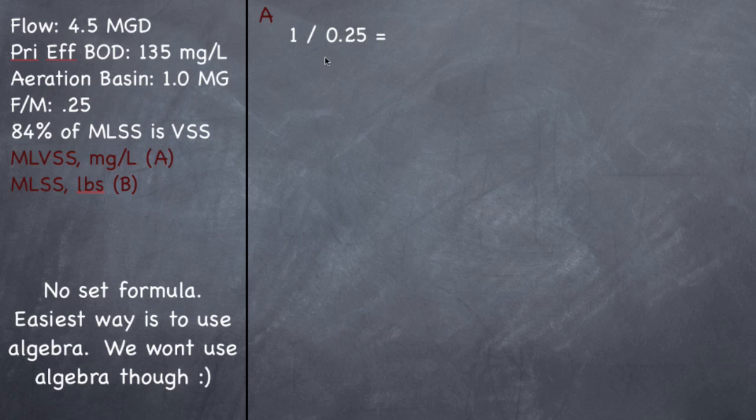So this would really be an M to F ratio, microorganism to food ratio. So if I take one pound of microorganisms and divide it by 0.25 pounds of food, that means that for every pound of food, I have 4 pounds of MLVSS.